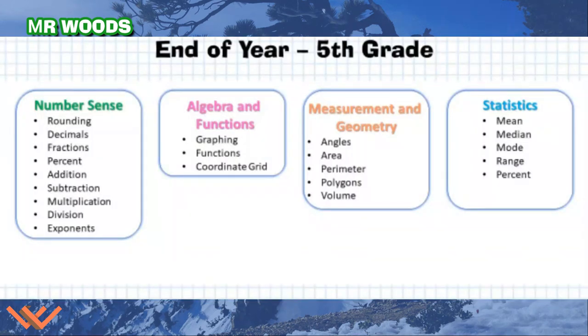So let's take a look. Here's the list of things that you need to know at the end of fifth grade. Not only do you need to know them and understand them, but you need to have a deep understanding to be able to be successful in sixth grade. In this first column, it says Number Sense. We're looking at rounding, decimals, fractions, percent, addition, subtraction, multiplication, division, and exponents.